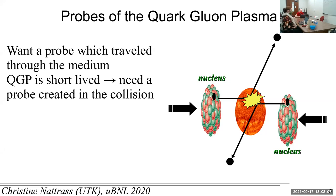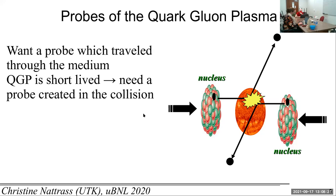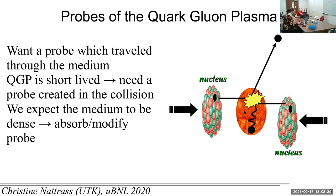When jets form, a quark or gluon in one nucleus scatters off a quark or gluon in another nucleus, and most of the time you end up with a back-to-back scattering of those two probes. Sometimes you can end up with three outgoing particles, but that's very rare — something like one in a thousand jets are from three-jet events. We expect the quark-gluon plasma to be very dense and to modify the medium, so we expect it to absorb the probe significantly.